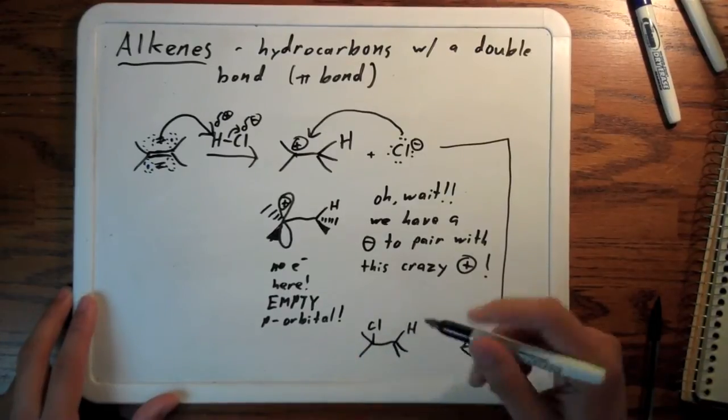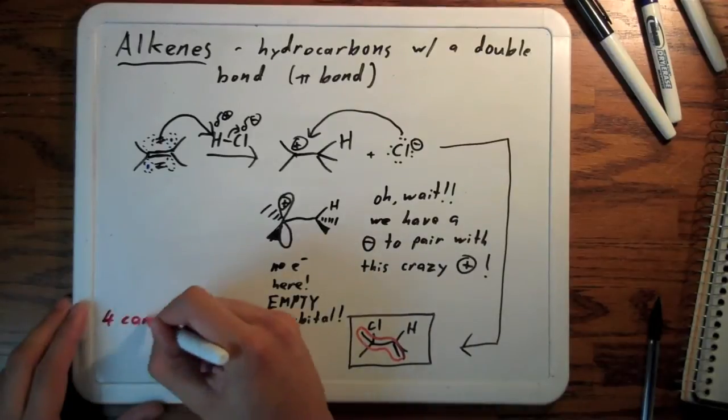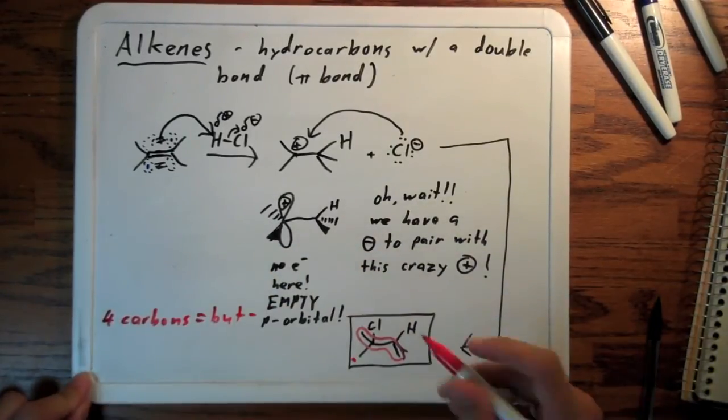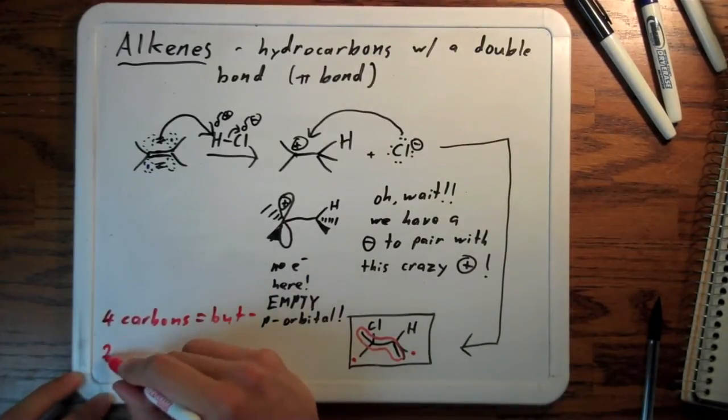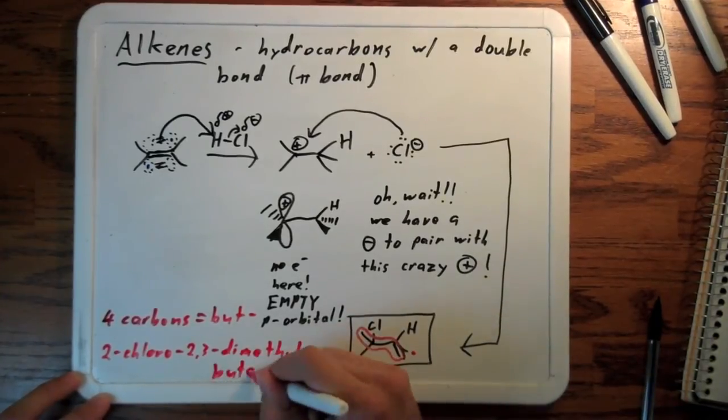2-chloro-2,3-dimethylbutane. And of course, you name it by finding the longest carbon chain. So, it's four carbons. But is the root. Two methyls on the two and three positions. Chlorine is highest priority in the two position. So, 2-chloro-2,3-dimethylbutane.